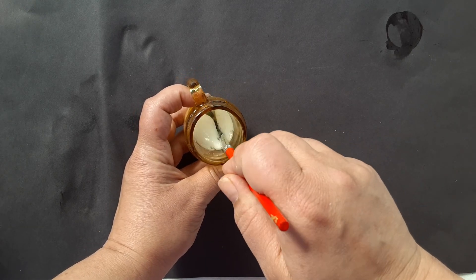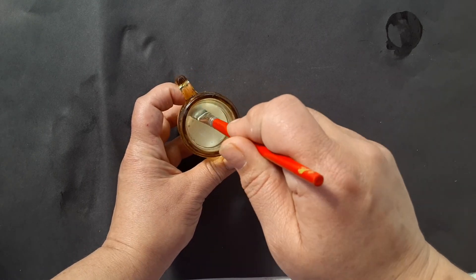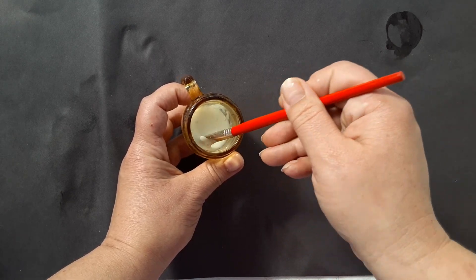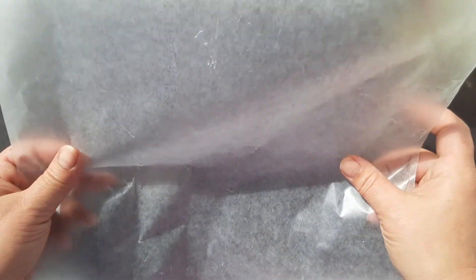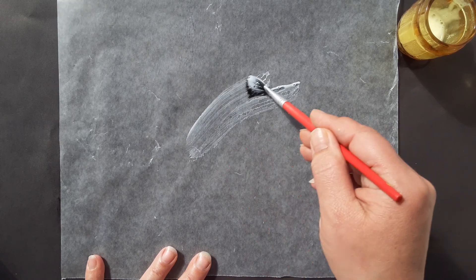To begin, I mixed a little bit of water in with some glue just to thin it out and make it easier to spread. Now we will take a piece of wax paper and start to spread some glue.